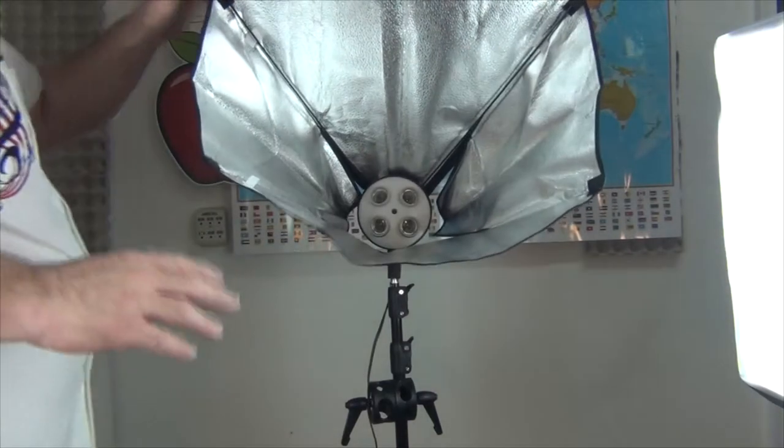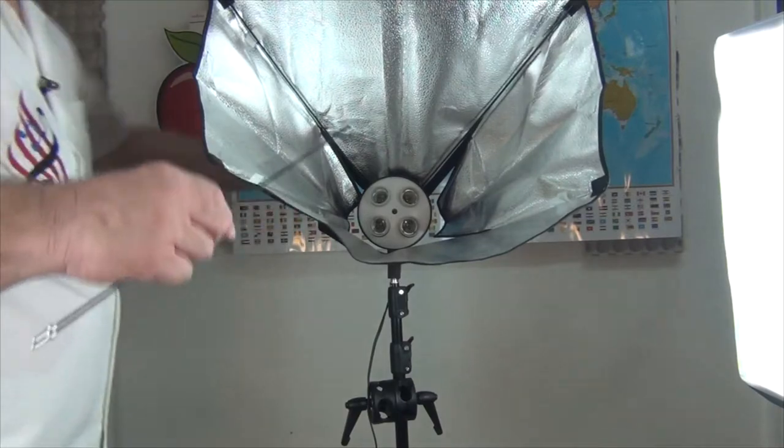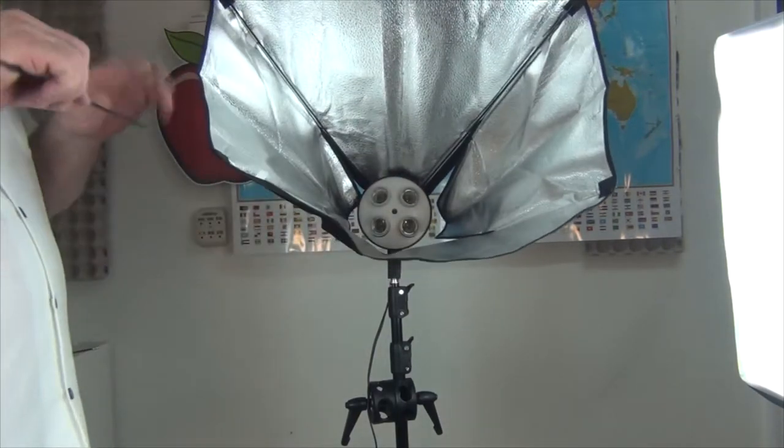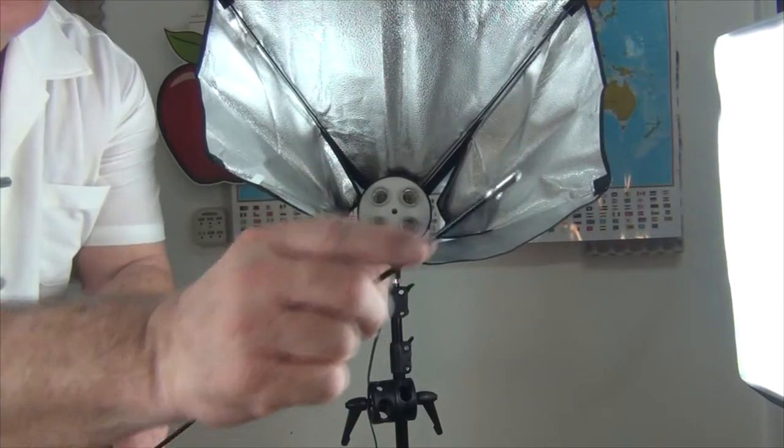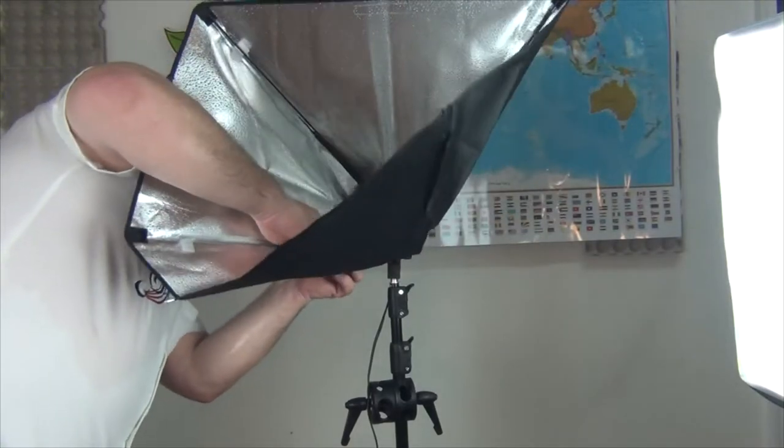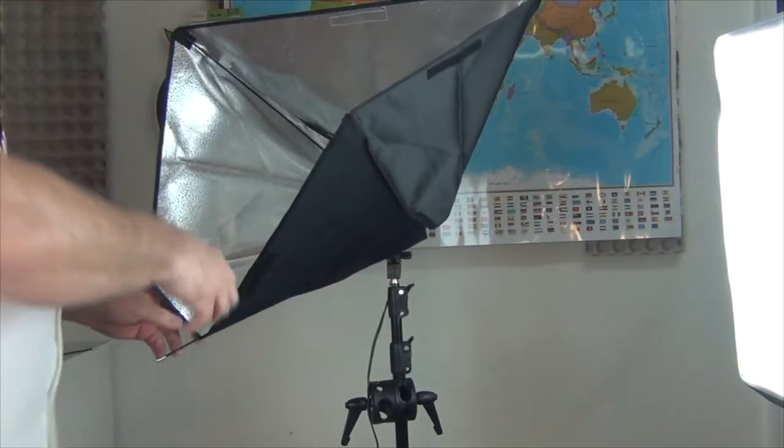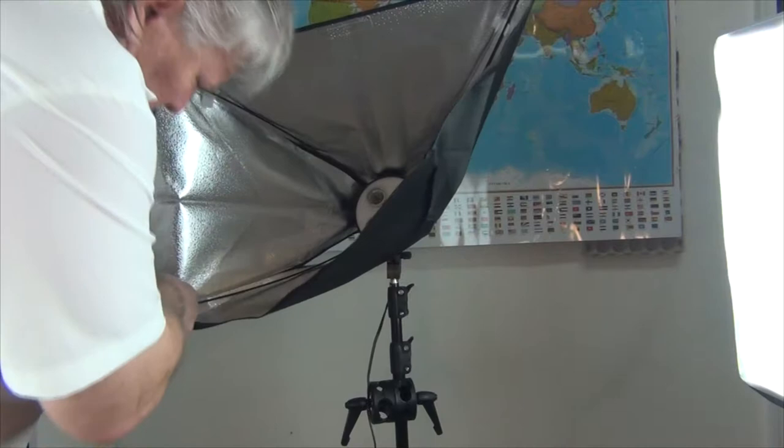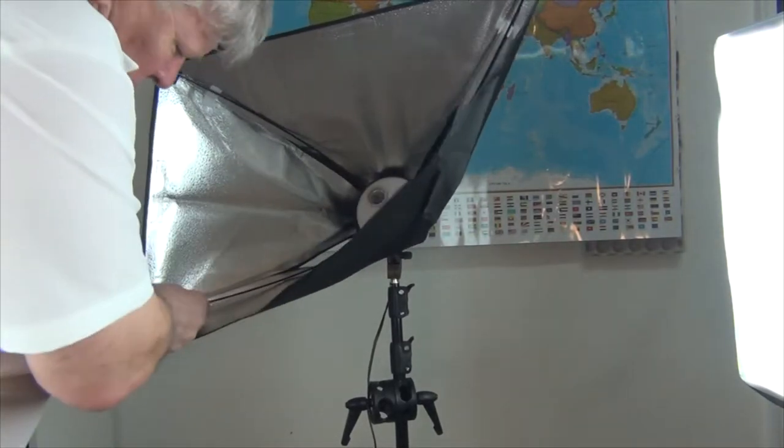So far so good, right? The first two are easy. The third one gets a little more difficult. You want to make sure the Velcro is loose. Make sure we get the correct side of the stick going into the light head. You've got the corner in.